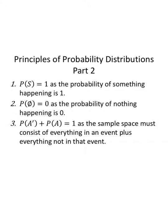Some more principles of probability distributions. Part one was in the relative frequency section. The probability of the sample space has to be one. Something has to happen. The probability of the empty set is zero because nothing happening is impossible. If we have a set A and its complement, the probability that A does not happen plus the probability that A does happen is one, because the sample space has to consist of everything in an event and everything not in that event.